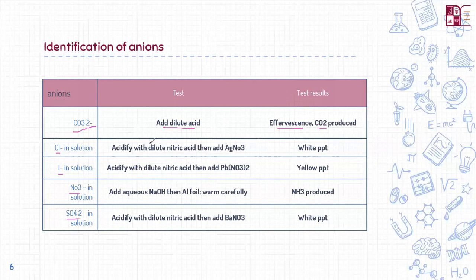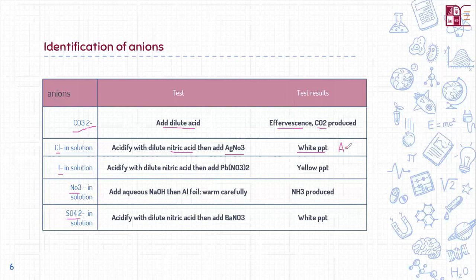For chloride, you acidify the solution with dilute nitric acid and then add AgNO3 (silver nitrate). It always forms white precipitates of AgCl (silver chloride). For iodide, you also acidify with dilute nitric acid, then add lead nitrate, and it forms yellow precipitates of lead iodide, PbI2, because lead has a 2+ charge.